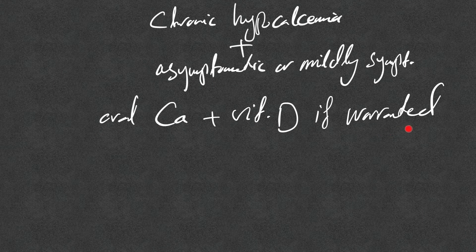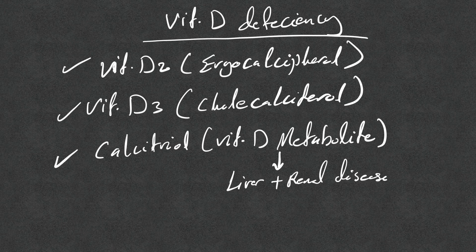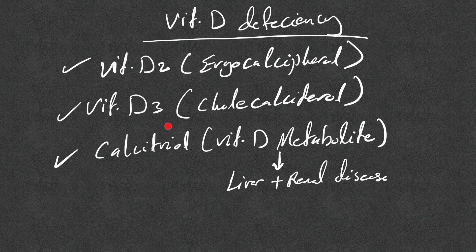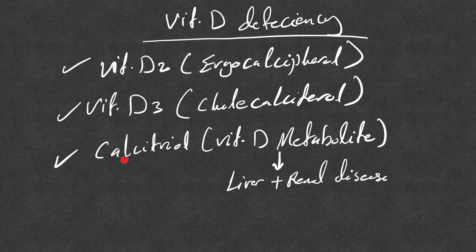Chronic hypocalcemia with no symptoms or mild symptoms is treated with oral calcium and vitamin D if deficient. Vitamin D2 (ergocalciferol) and D3 (cholecalciferol) still need metabolic activation in the liver and kidney. Calcitriol, a vitamin D metabolite, bypasses the need for liver and renal metabolism — making it preferable in patients with liver disease or chronic kidney disease, and also in acute hypoparathyroidism due to its faster action.